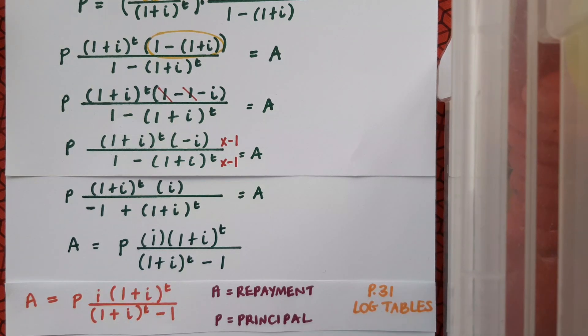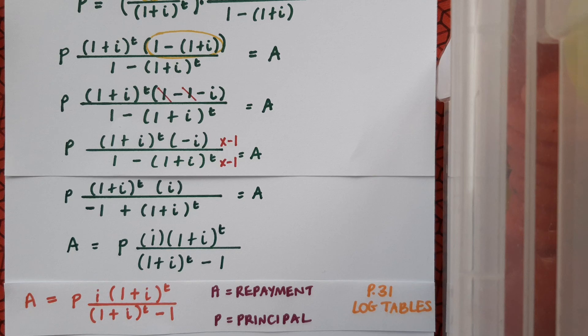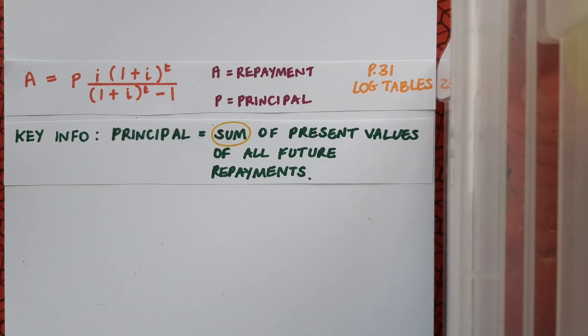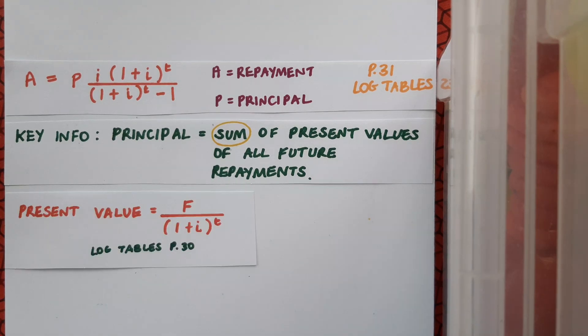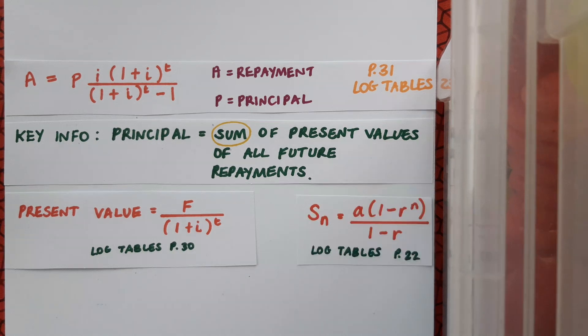And just to be 100% sure let's compare it to what we were aiming for and you can see that the two formulas are identical. So in conclusion just remember that when we're trying to derive the amortization formula our key piece of information is that the principle equals the sum of the present values of all future repayments. That means that we'll need the present value formula from page 30 in the log tables and the sum of the geometric series formula also.